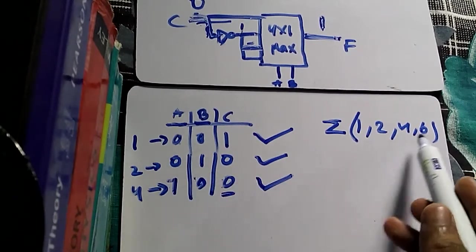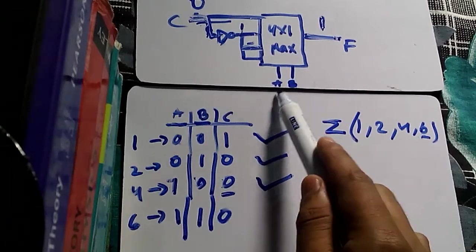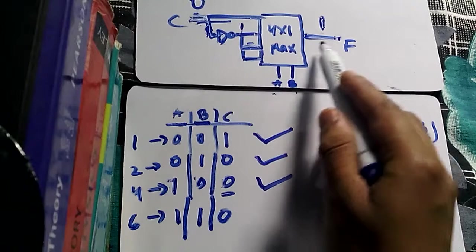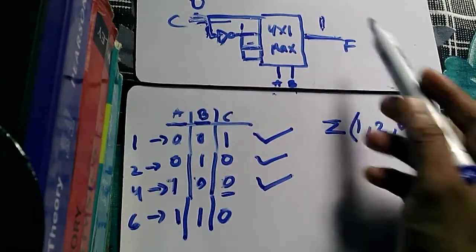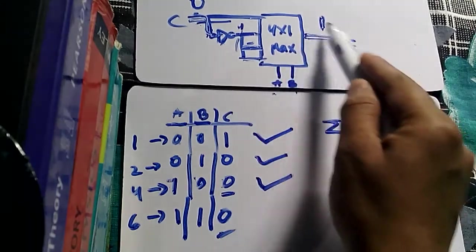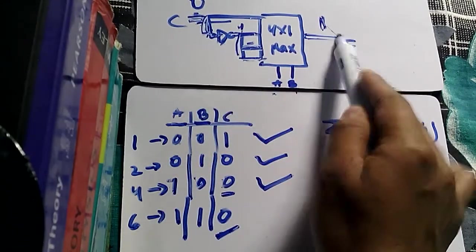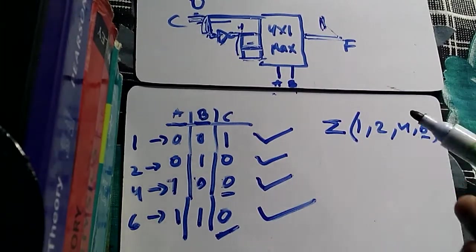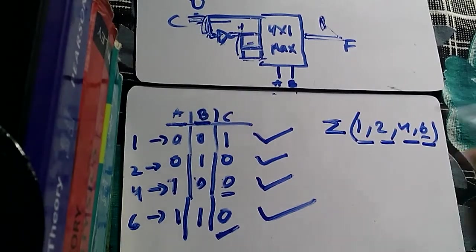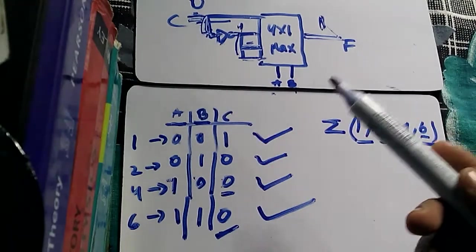The fourth value is minterm 6, binary code 1 1 0. Here A=1, B=1, and C=0. With A=1 and B=1, the fourth input line connects directly to F. C=0 passes through the NOT gate and becomes 1, passing through this fourth line, so the output is 1. Option 2 satisfies all values specified in the function Σ(1, 2, 4, 6). Therefore, option 2 is our answer.